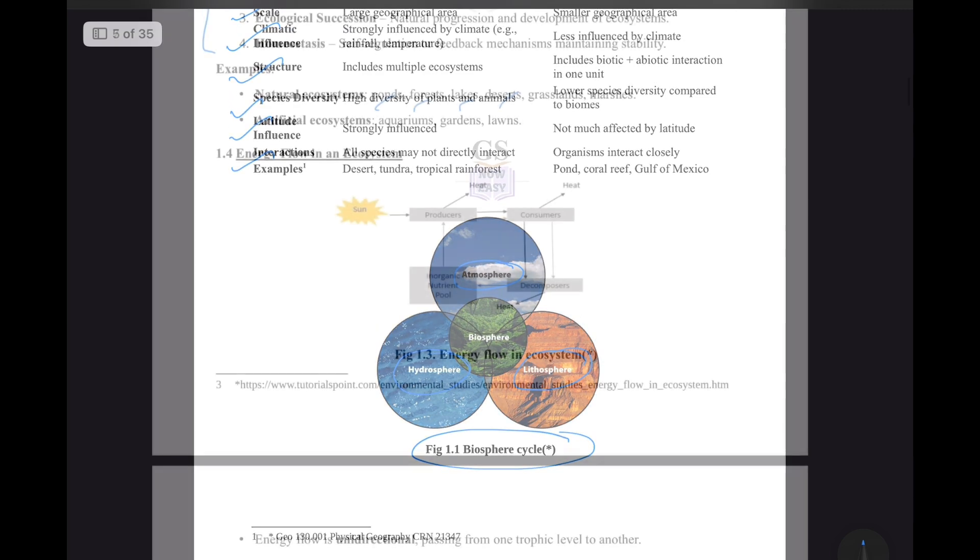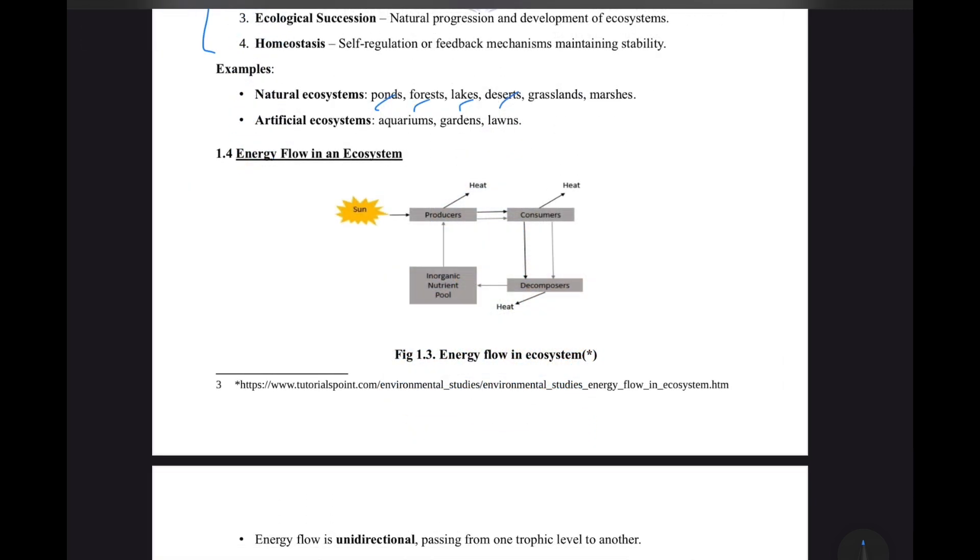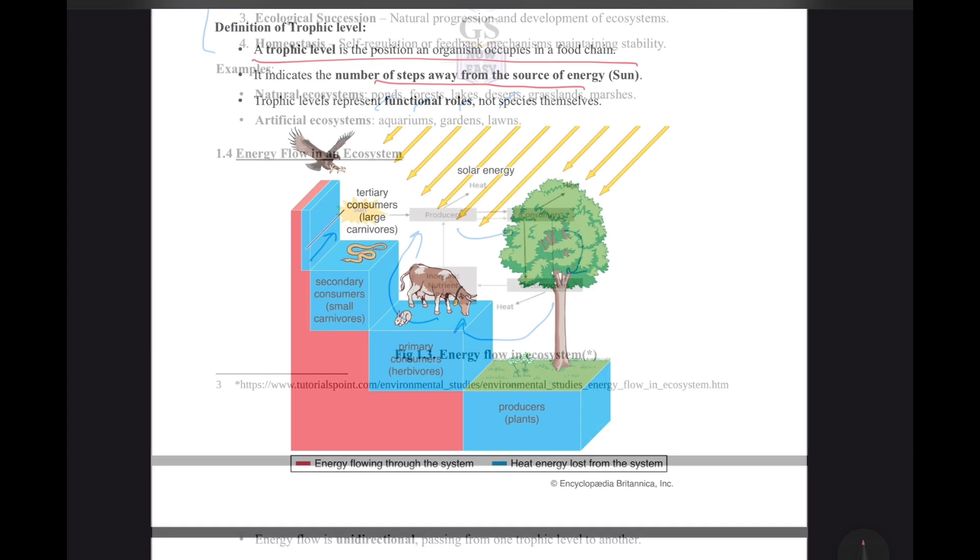This is a good illustration of the energy flow in an ecosystem. There is this primary source, sun. Then producers gain the energy and release it as heat. Then producers are consumed by consumers. Then they decompose and eventually they turn into inorganic nutrient pool, which are again consumed by the producers as a source of energy.